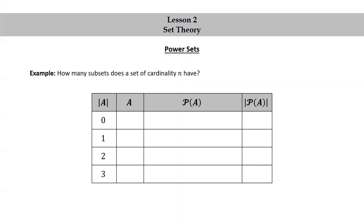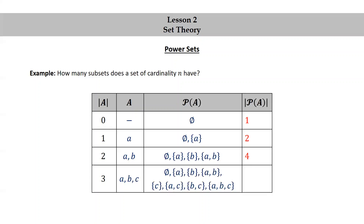If the cardinality of the set is 0, there are no elements to list, and there is one subset — the empty set — so the cardinality of the power set is 1. If the cardinality of A is 1, a typical set might be {a}, and the power set consists of the empty set and the set containing a, giving cardinality 2. If the cardinality of A is 2, with elements a and b, the power set consists of the empty set, set a, set b, and the set {a, b}, giving cardinality 4. If the cardinality of A is 3, with elements a, b, and c, the power set has the empty set, set a, set b, set ab, set c, set ac, set bc, and set abc, giving cardinality 8.